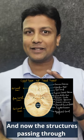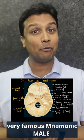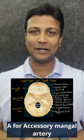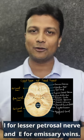Now the structures passing through foramen ovale - I hope you remember that very famous mnemonic MALE. M stands for mandibular nerve, A for accessory meningeal artery, L for lesser petrosal nerve, E for emissary vein.